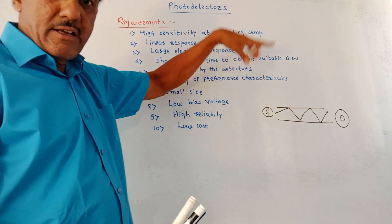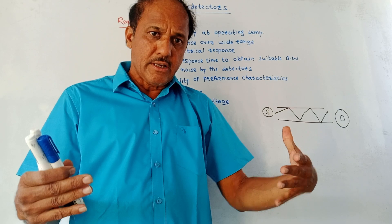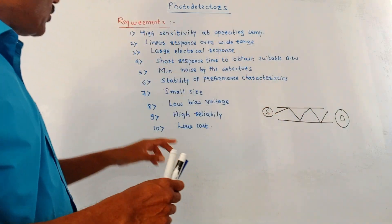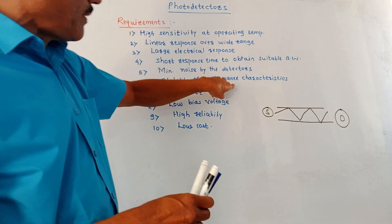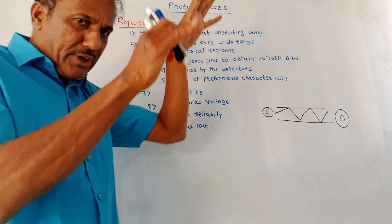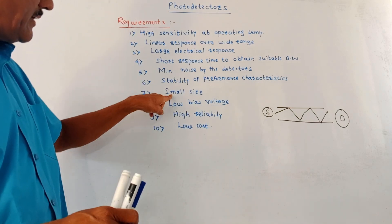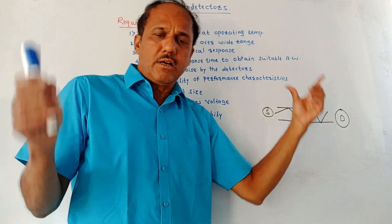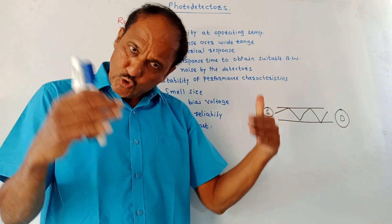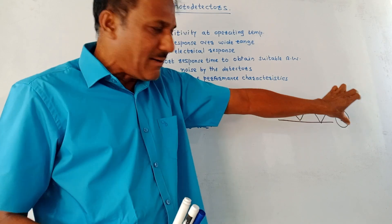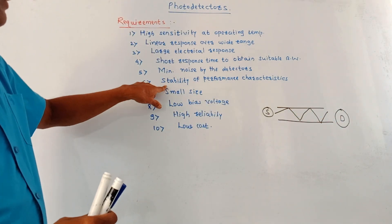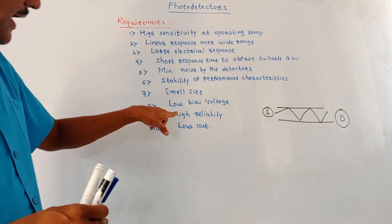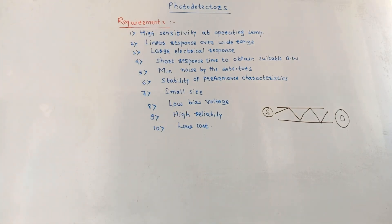Next, minimum noise by the detector. Many detectors produce a large amount of dark current, which is considered a noise signal, so the selected detector should produce very little noise. Then, stability of the performance characteristics — all performance characteristics should be stable. The detector should have a small size, since the diameter of optical cable is very small, making it easy to connect. Then, low bias voltage — the requirement of bias voltage should be as low as possible. And it should have high reliability and low cost.